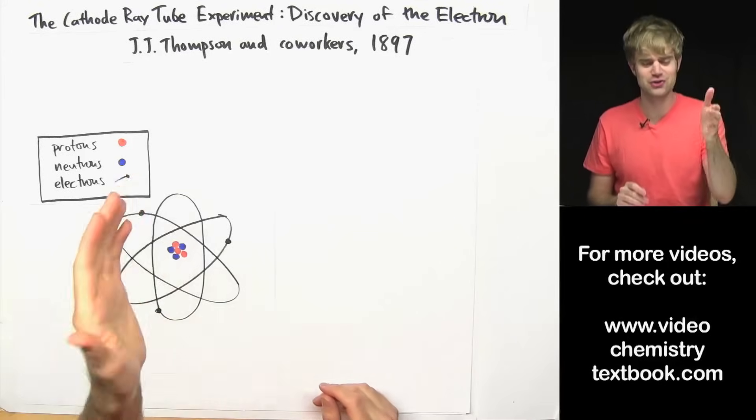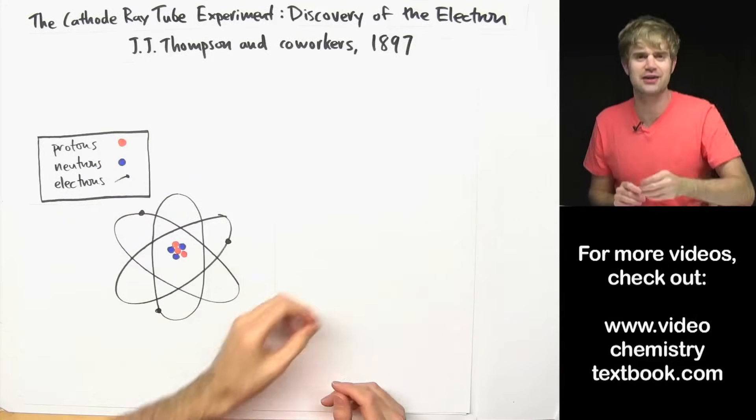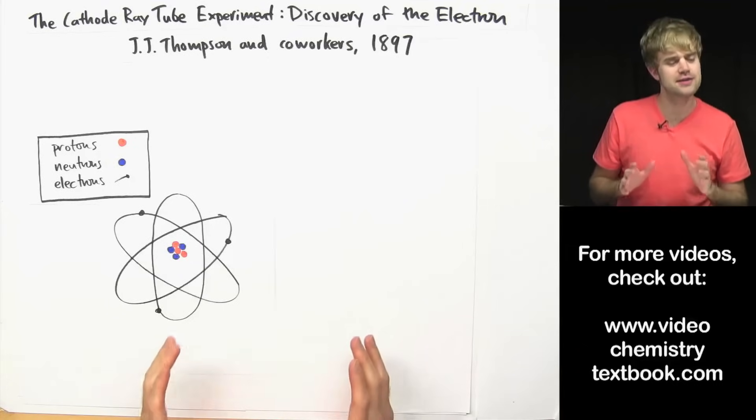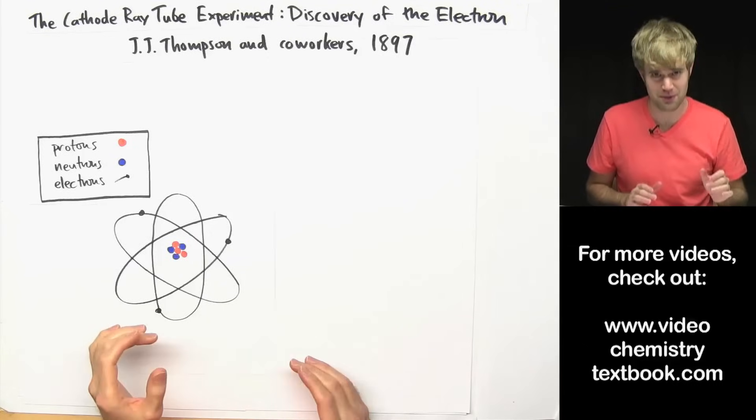In this video we're going to talk about how JJ Thompson discovered the electron in 1897 using the cathode ray tube experiment.